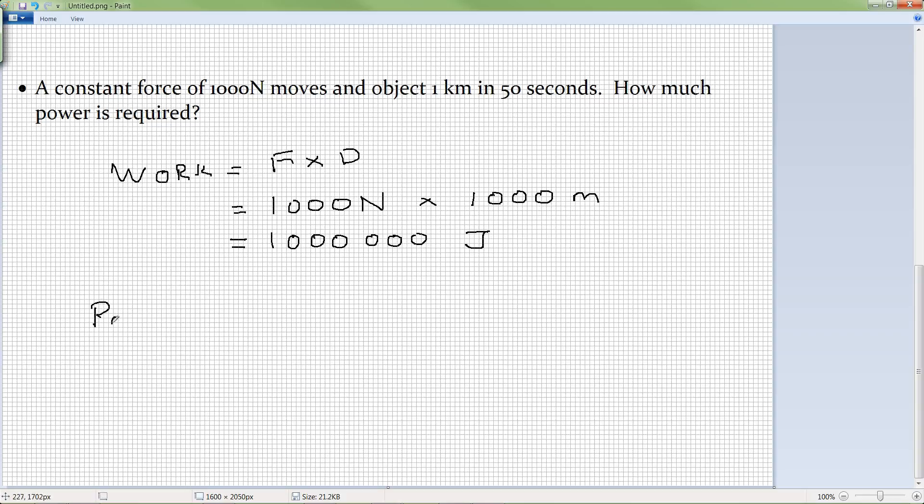And so what I would have is a million newton meters or joules of work that is done. If I go to look at what the power is, power is going to be work divided by time, which is going to be equivalent to a million joules divided by my time, 50 seconds. Which would then be equal to 20,000 joules per second or watts, or if I want to make that a little cleaner, 20 kilowatts.